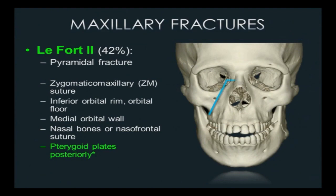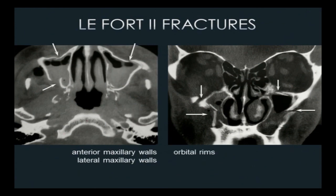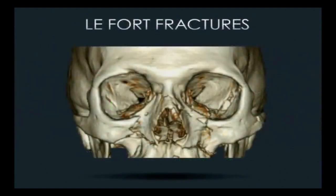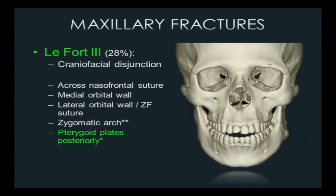The LeFort II pyramidal fracture goes up across the maxilla, crosses the medial orbital walls and nasal bones, then back down the opposite side, exiting through the pterygoid plates. On axial images we see fractures through the anterior and lateral maxillary walls, extending through the inferior orbital rims as it ascends across midline and back through the pterygoid plates. On 3D CT, the surgeons get the big picture — the LeFort II pattern following the rules clearly, with the global view needed to understand where all the fragments and fracture lines are.